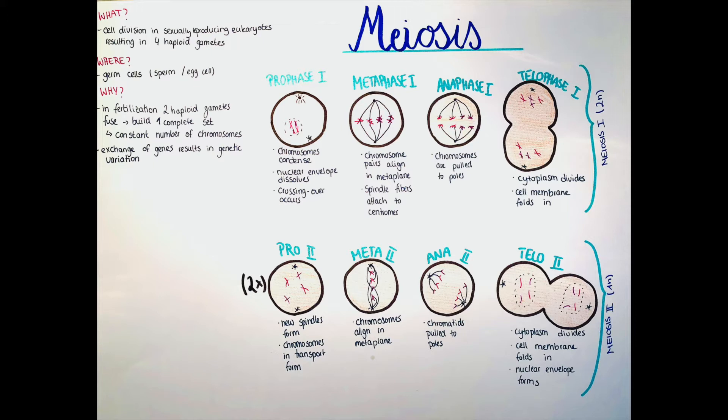The meiosis is divided into meiosis one and meiosis two. In the first meiosis we have a diploid set, so a 2n set of chromosomes. And in the second meiosis we have a haploid set, so just half the number, half a set of chromosomes.